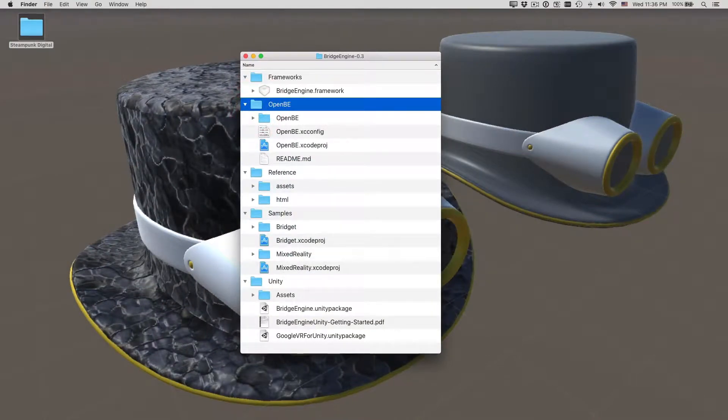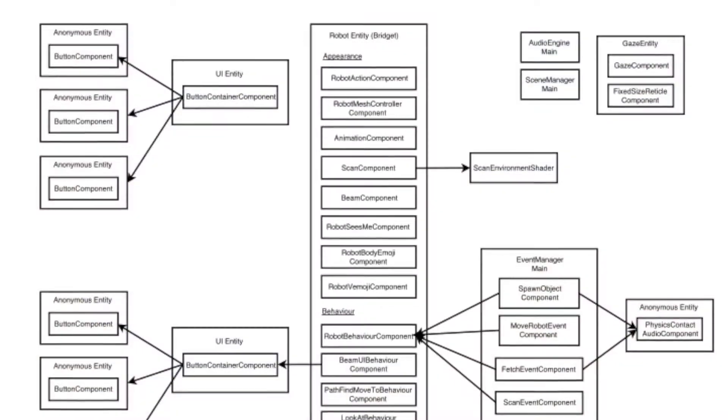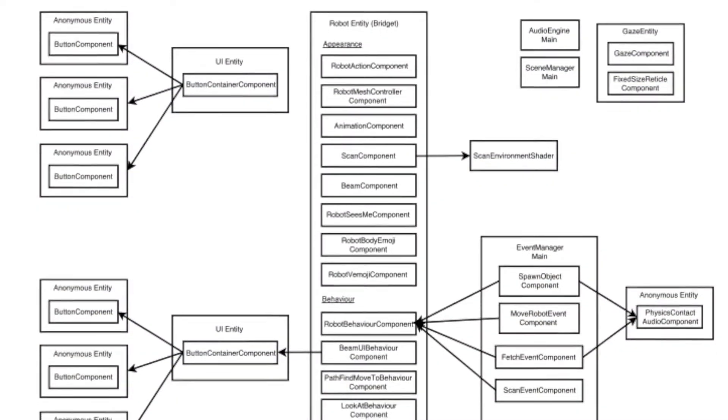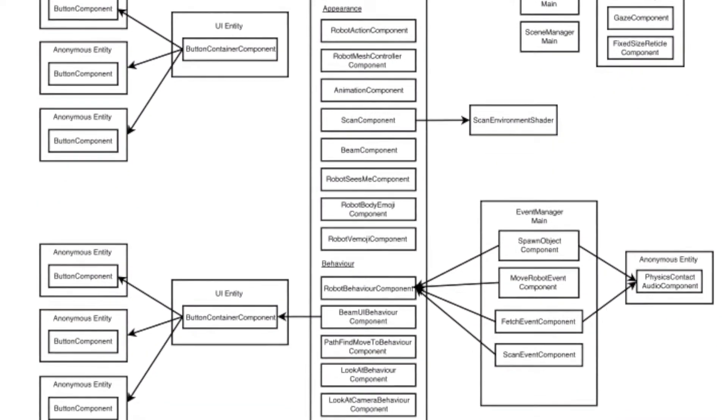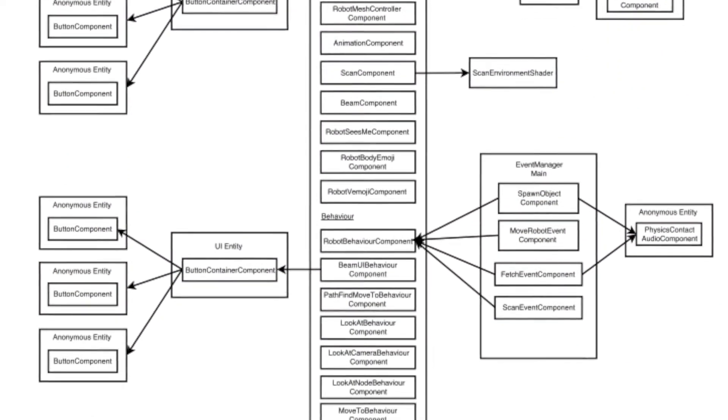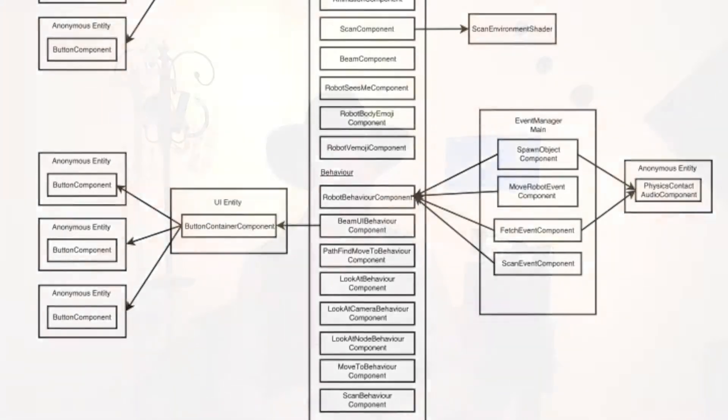OpenBE is designed around a component architecture that is pluggable to add new behaviors and capabilities to objects. This is where we can start building cool new spatial computing capabilities, plug them together, and everyone wins.